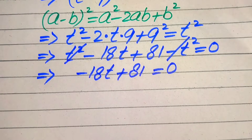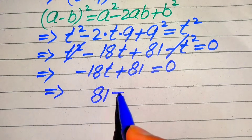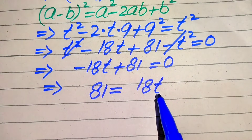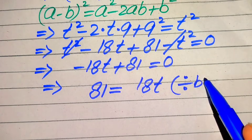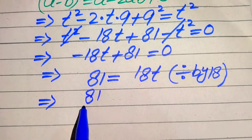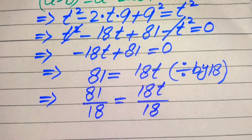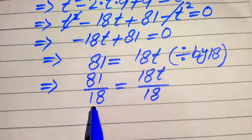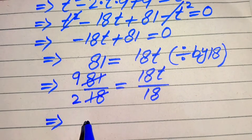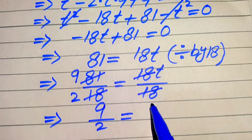Now to find the value of t, we move minus 18t to the right hand side and it will be written as 81 is equals to 18t. To remove 18 from the right hand side, we divide both sides by 18, giving 81 divided by 18 equals t. Simplifying using the table of 9: 9 nines are 81 and 9 twos are 18, so we get t equals 9 over 2.